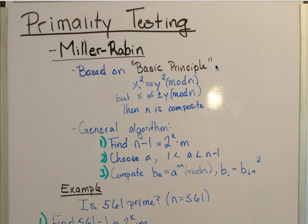It is based on what's called the basic principle in some books, which states that if there is an x and a y such that x squared is congruent to y squared mod n, but x is not congruent to plus or minus y mod n, then n is composite.